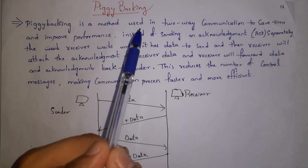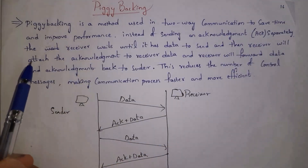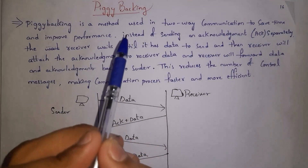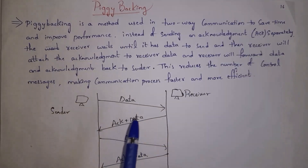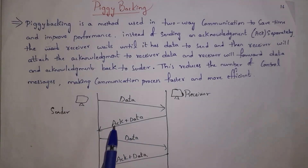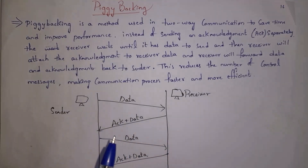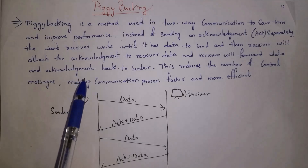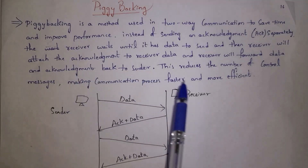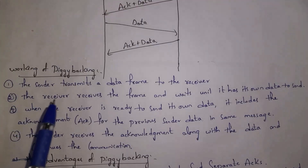Instead of sending acknowledgement separately, the receiver waits until it has data to send. Then the receiver attaches the acknowledgement along with its own data and forwards both to the sender. As we are sending both acknowledgement and data at once, this reduces the number of messages. This makes the communication process fast and more efficient. This is how piggybacking works.